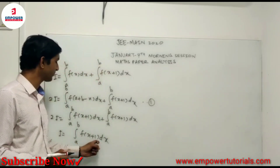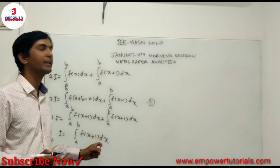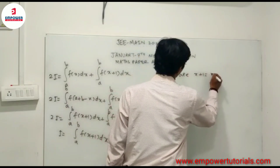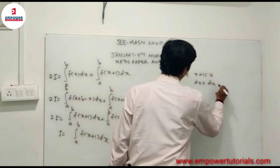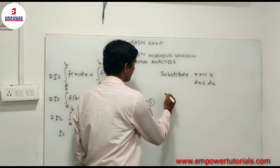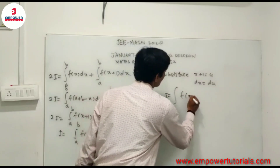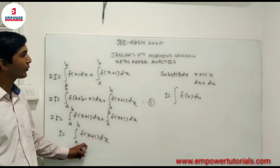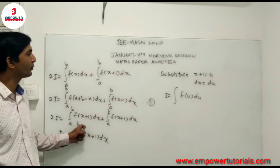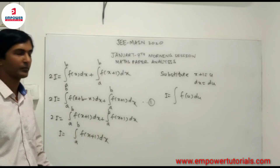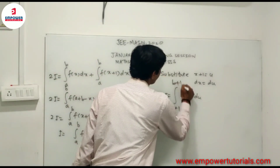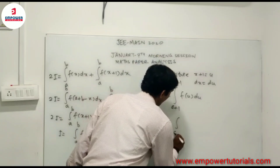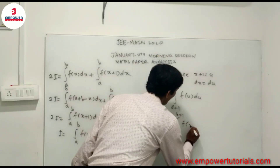We now substitute x + 1 = u in the integral from a to b of f(x+1) dx, so dx = du. When x = a, u = a+1; when x = b, u = b+1. Therefore I = integral from a+1 to b+1 of f(u) du. Renaming the variable back to x, the final answer is I = integral from a+1 to b+1 of f(x) dx.